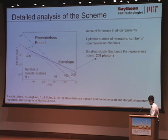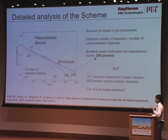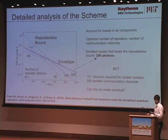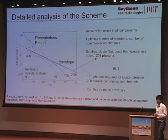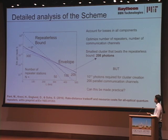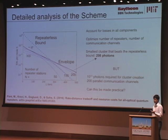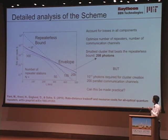We found that the smallest cluster that can beat the repeaterless bound is 208 photons — a reasonable number. But when we calculated how many photon sources would need to fire each clock cycle to make these states using linear optics, we arrived at 10^11 photon sources at every repeater station per clock cycle, plus 200 parallel communication channels. In our minds, these requirements are clearly not practicable — if you were to suggest this to experimentalists, they would hate you.